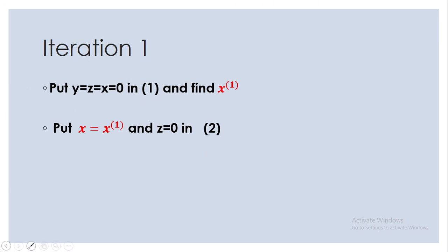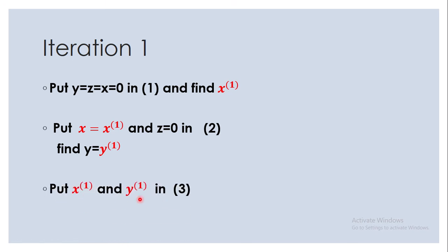After finding x1, you put x1 in equation two along with z = 0 and find y1. You can probably guess the next move: you put x1 and y1 into equation three and find z1. In Gauss-Seidel, whatever value you get, you make use of it immediately from that point — you don't wait for the next iteration as in Jacobi's method. As soon as you get a value, you use it.